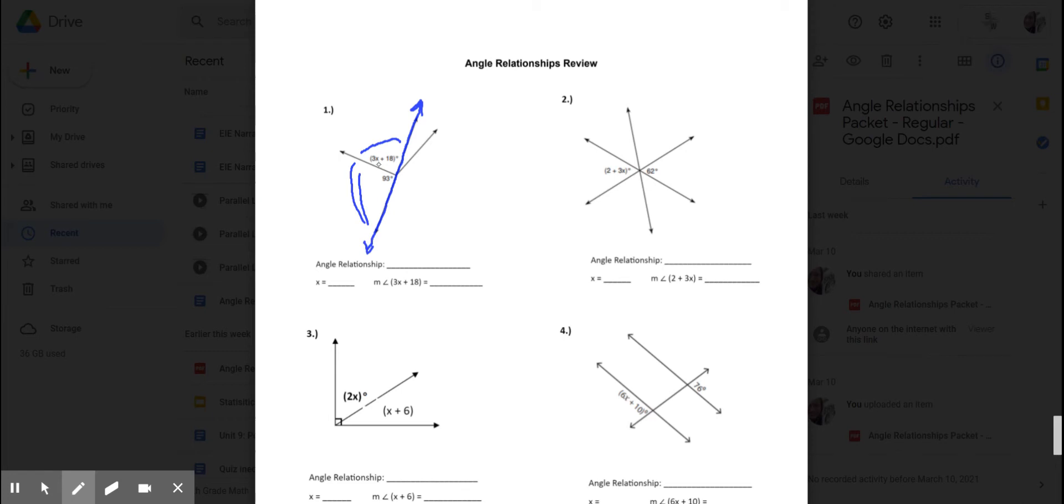So, since those two angles together make a straight angle, that makes them supplementary. So, I'm going to write that the angle relationship is supplementary. I'm going to need to find the value of x, it's asking what x equals, and it's also asking me the measure of the angle that is 3x plus 18.